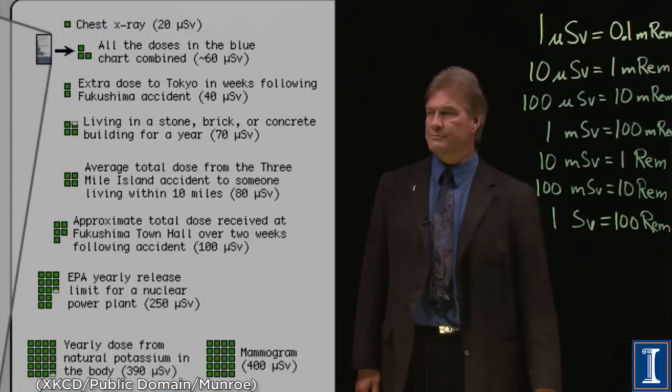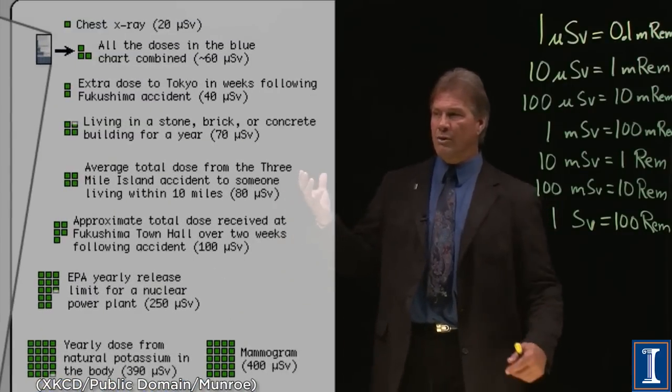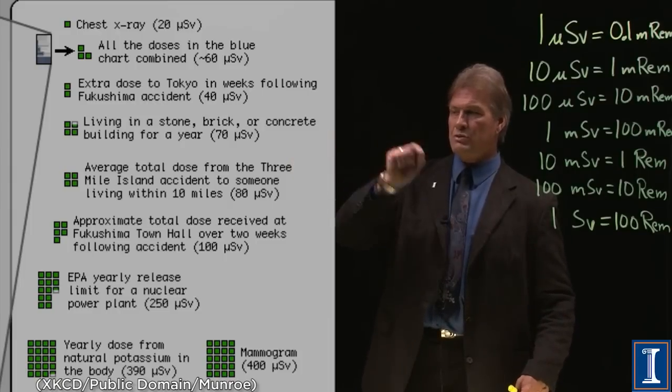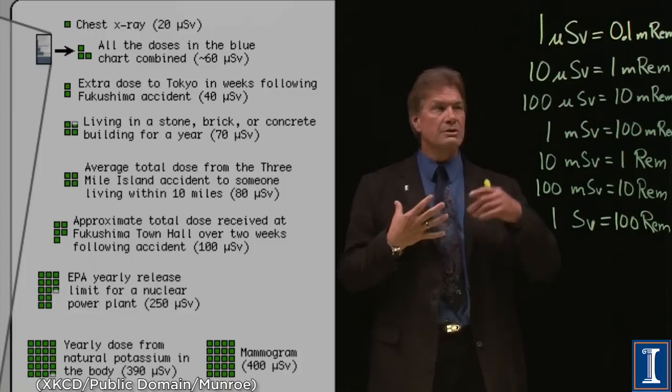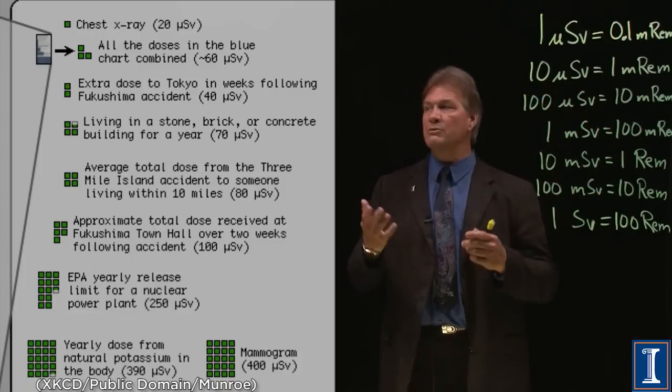Much more dangerous is the part about the plane maybe not landing. The four millirems, nothing to worry about. Let's look a little further. Now we'll take all those blue charts and they will turn into be just one of these green ones. You see, an x-ray of your chest is 20 microsieverts, about two millirem.